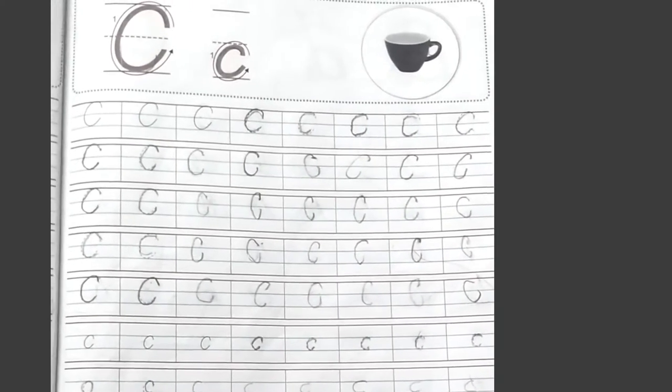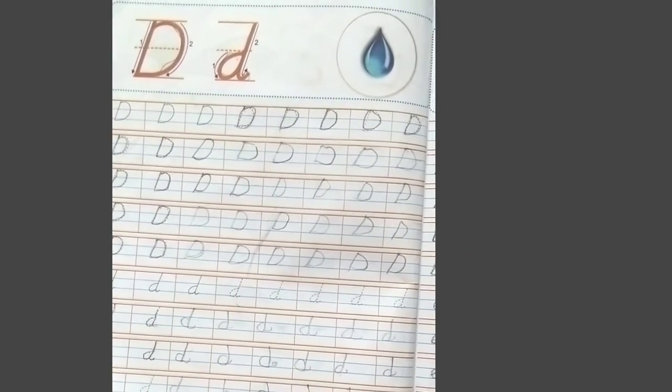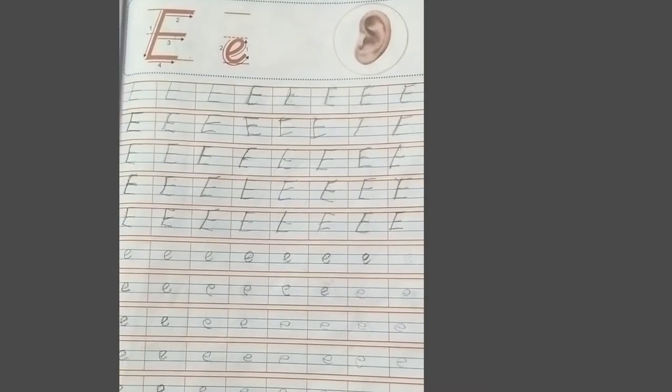Capital D and small d, D for drop. Capital E and small e, E for egg.